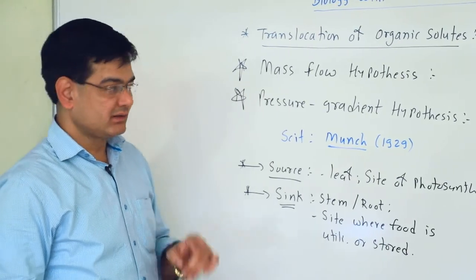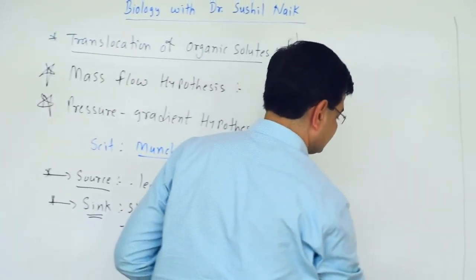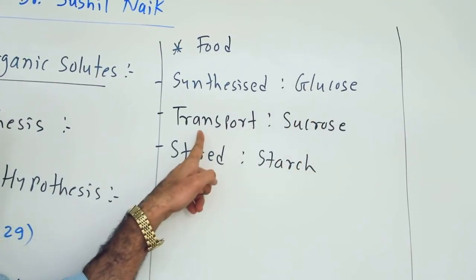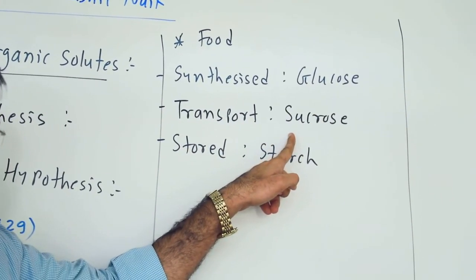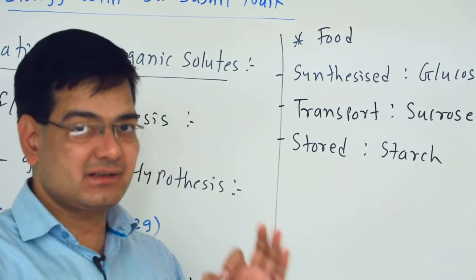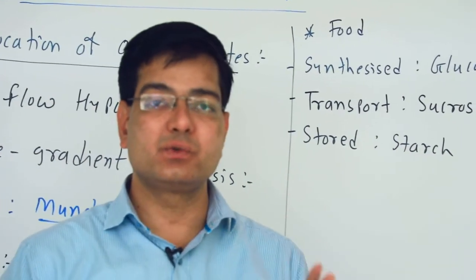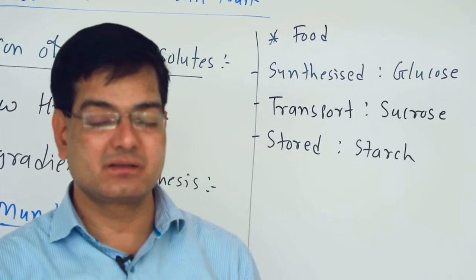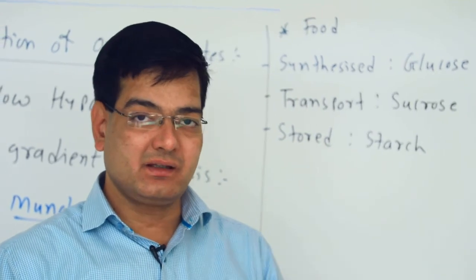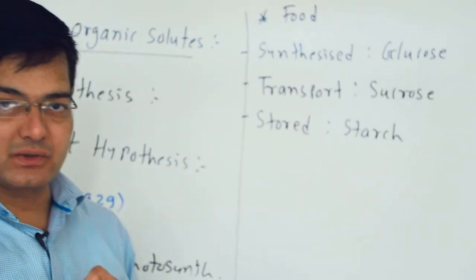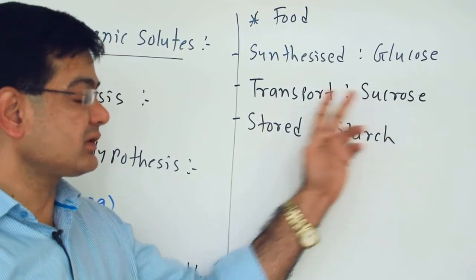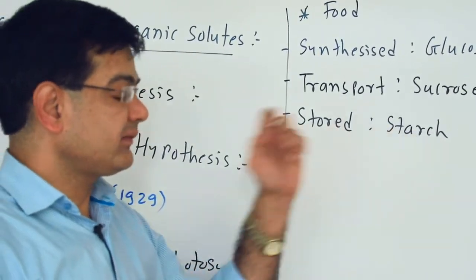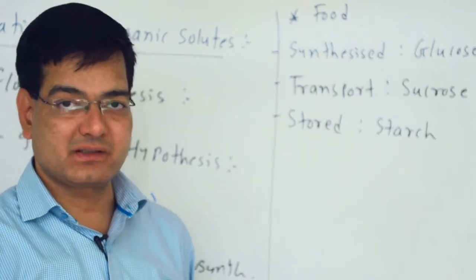Remember that food is always synthesized in the form of glucose but transported in the form of sucrose. Sucrose is a disaccharide and it is a non-reducing sugar — it generally does not react with other substances, which is why it is non-reducing. Food is transported through the phloem in the form of sucrose, and food is stored in the form of starch, which is a polysaccharide.